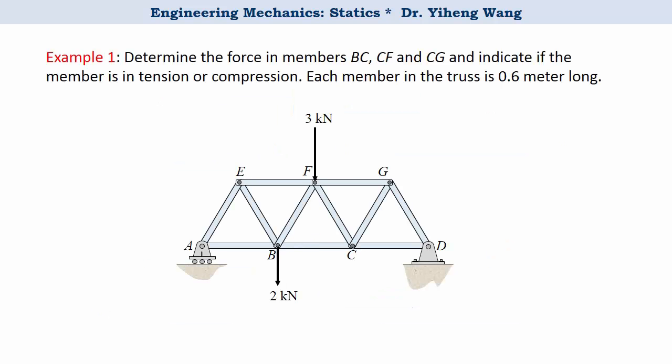Let's look at this example. For this structure, we are not asked to solve for all members, just BC, CF and CG. Therefore, instead of using the method of joints, we use the method of sections, because this way there are fewer steps involved.